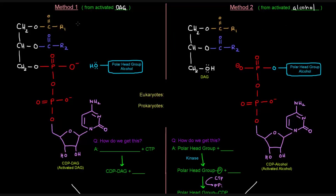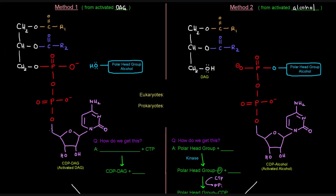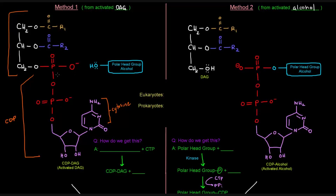In method one, we have an activated diacylglycerol. The activated diacylglycerol is this entire molecule called CDP-DAG. Here you can see the diacylglycerol portion, and the rest, including these two phosphates, is the CDP portion from the nucleotide — cytosine is the nucleotide base, and those are the diphosphate portion. When this CDP is attached to the diacylglycerol, the diacylglycerol is considered activated.